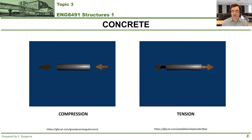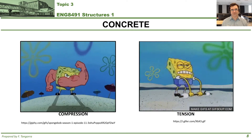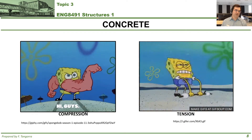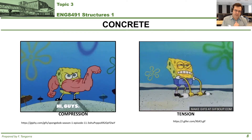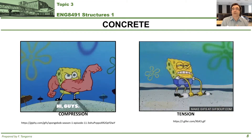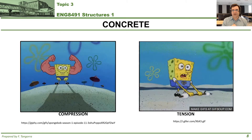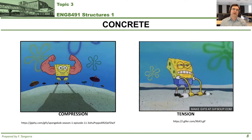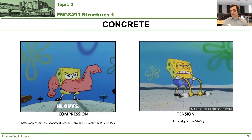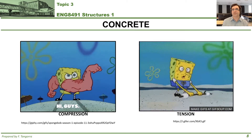Concrete is great in compression — for example, in columns. However, concrete is not very good in tension. To put some numbers to it: if you have a concrete element that can resist, say, 100 kilonewtons in compression before cracking, if you were to put a tensile force on that element, it would not resist even 10% of that. For all intents and purposes in structural engineering, concrete is essentially zero when it comes to resisting tensile forces.